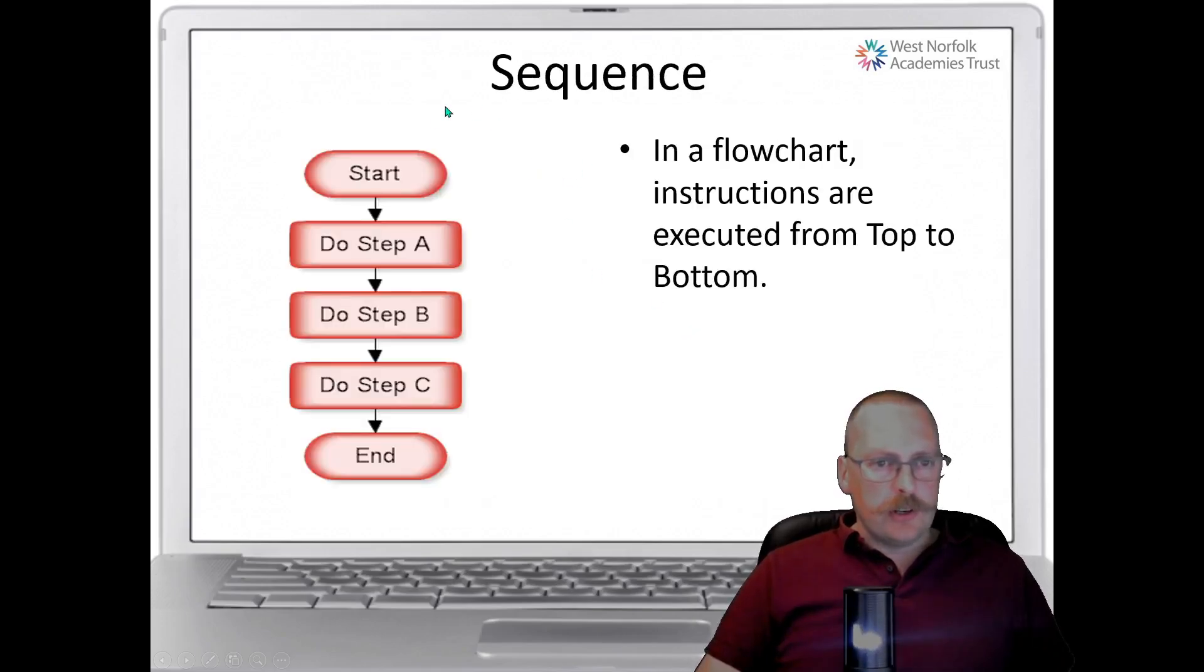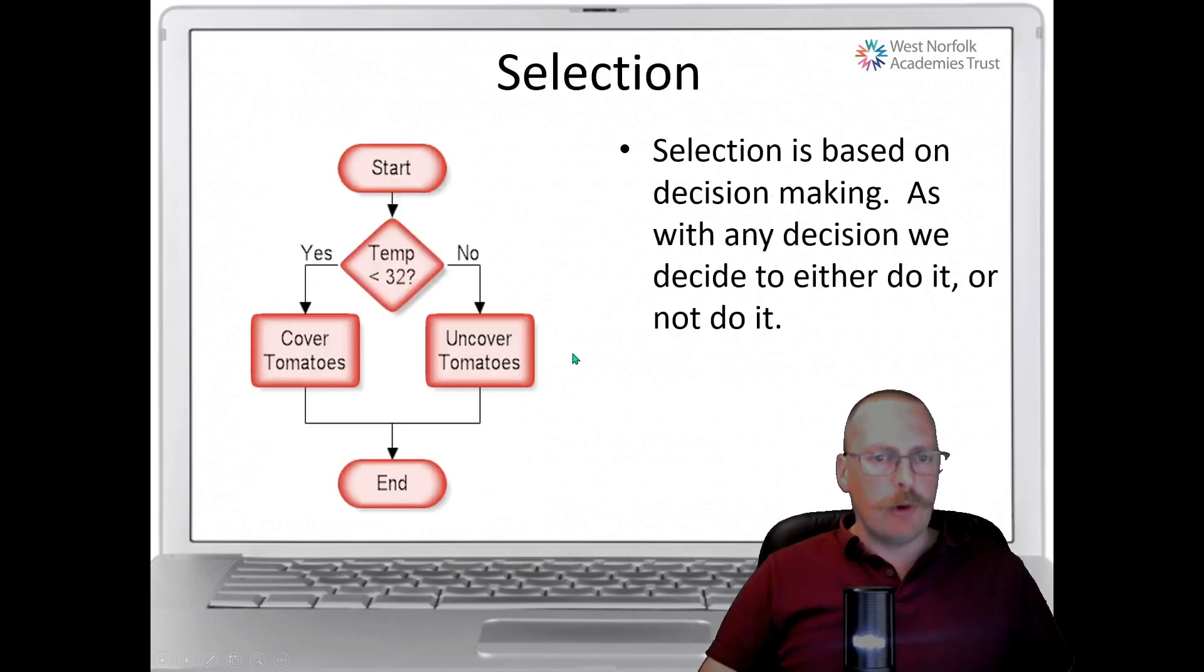With our flowchart this is sequence flow where we have one item followed by next procedure by next procedure by next procedure and so on. We can have a selection where we have an if decision and this is 32 degrees Fahrenheit which is zero degrees. So if it is freezing, if it's less than zero then we need to cover tomatoes. If not we can uncover them. So that is an if decision.